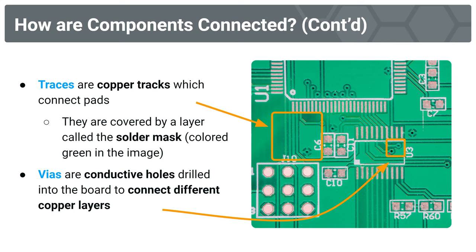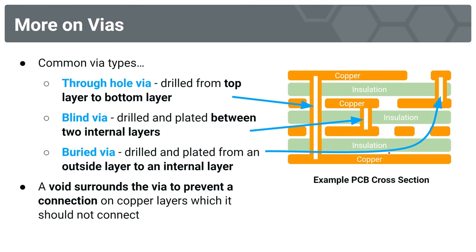Now we have different types of vias, which we can observe through this cross-sectional view of a PCB. We have those alternating copper and insulation layers, and each copper layer might have different traces. We have the through-hole via — this is drilled from the top copper layer of a PCB to the bottom copper layer. We have blind vias, which are drilled between two internal layers. If we had this internal copper layer and another internal copper layer, we could connect the two by using a blind via.